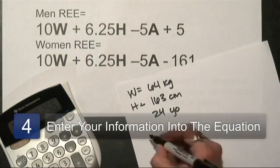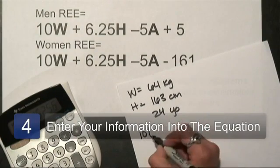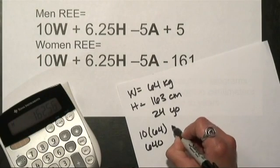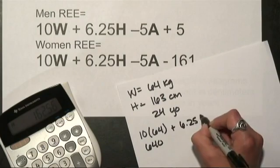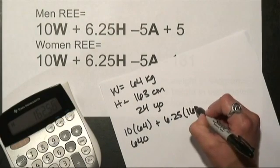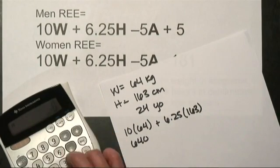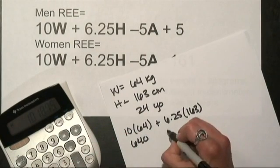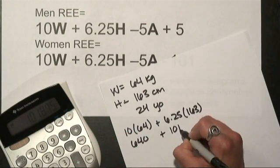Now when we plug this into the equation, it's very simple. So 10 times 64 is 640, plus my 6.25 times my height of 163, which I'm going to use my calculator for, which is just about 1019.